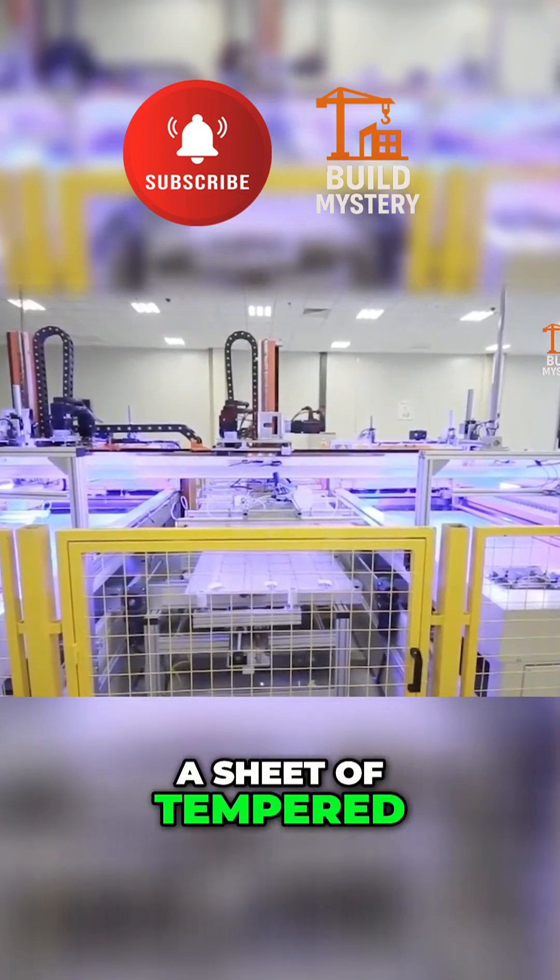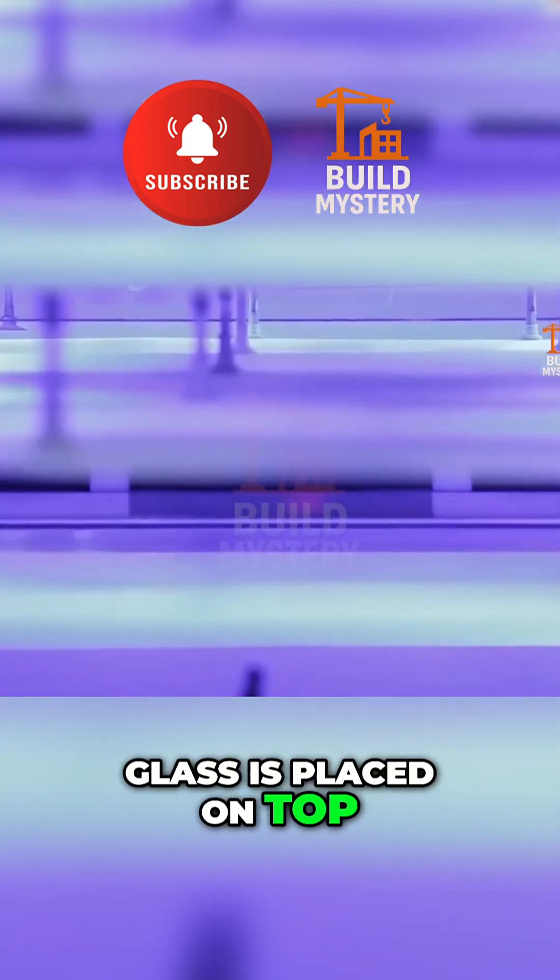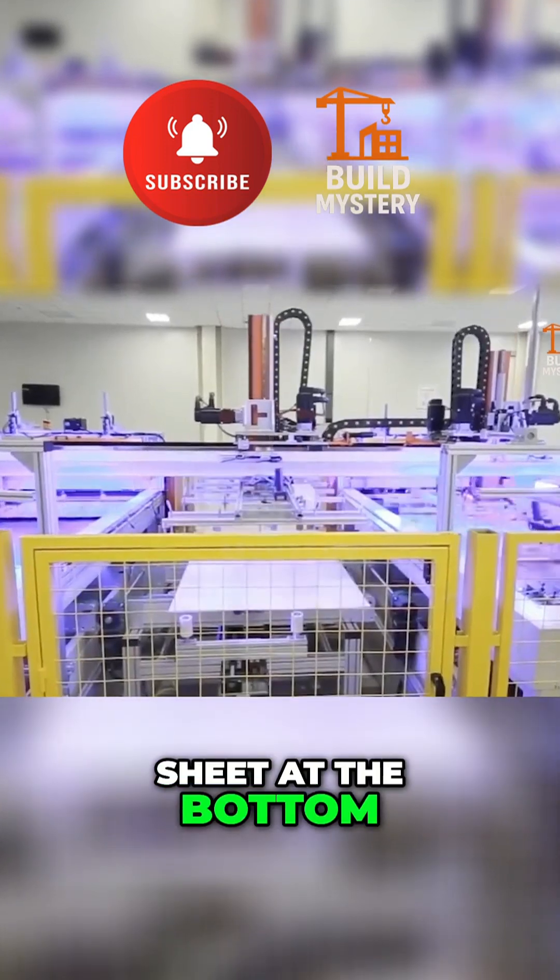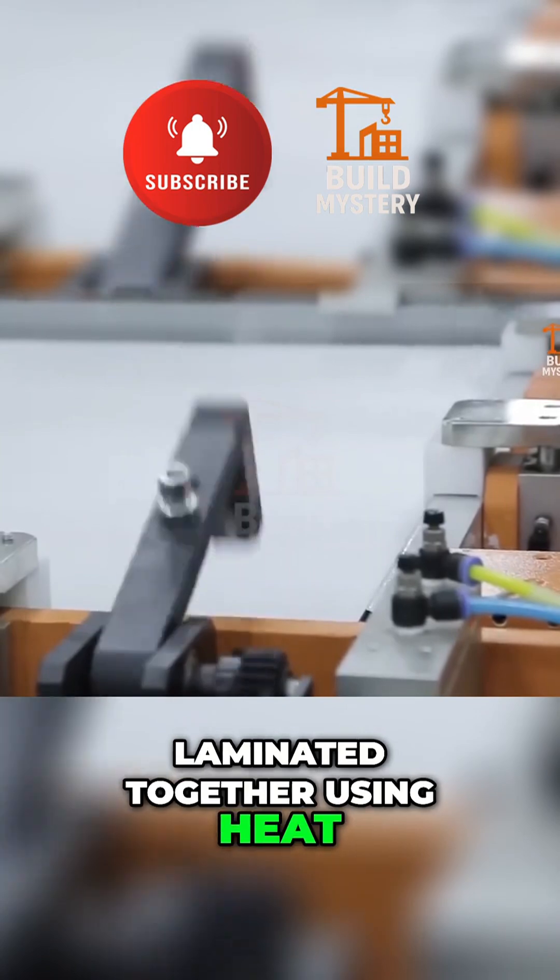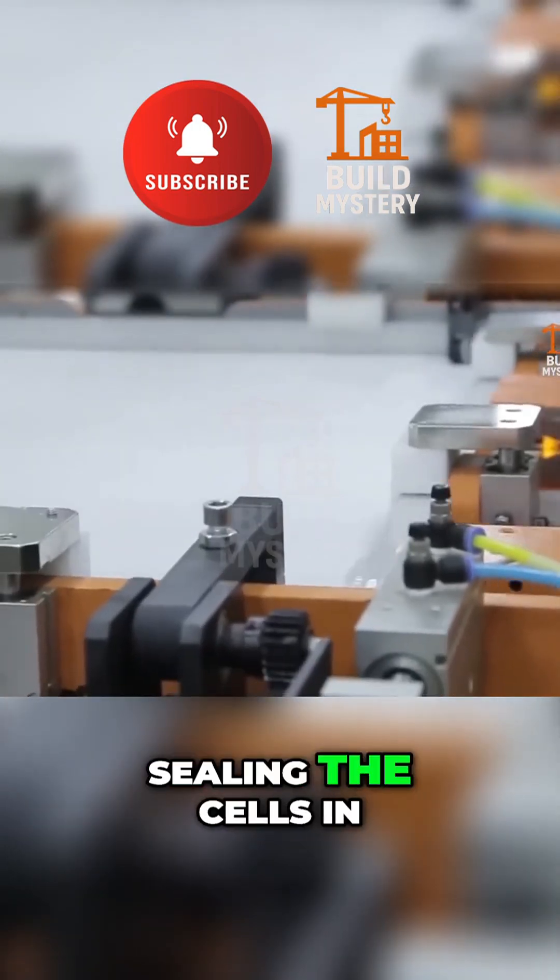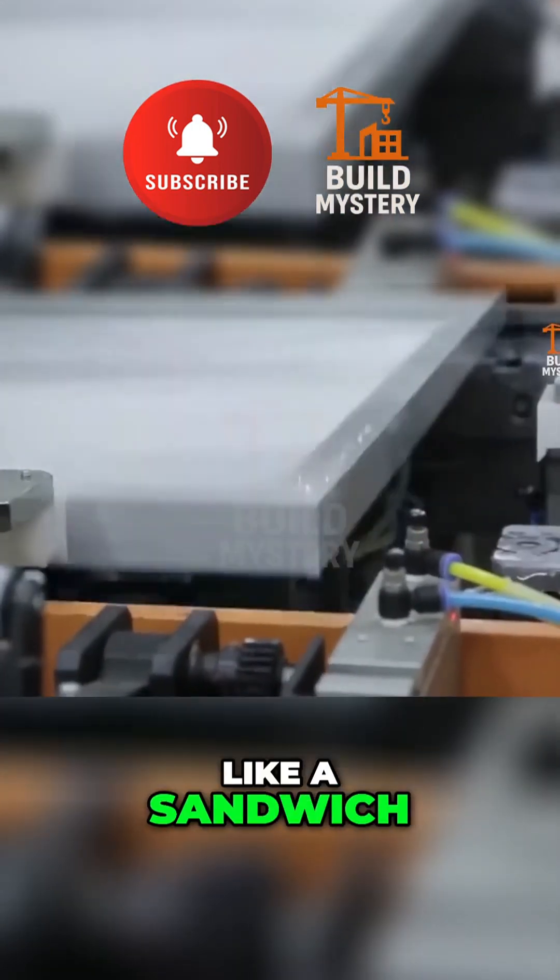A sheet of tempered glass is placed on top, followed by a back sheet at the bottom. These layers are then laminated together using heat and pressure, sealing the cells in like a sandwich.